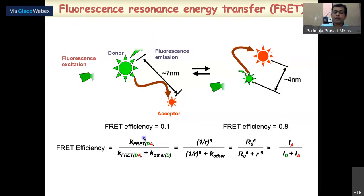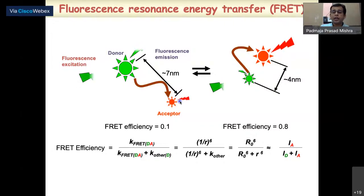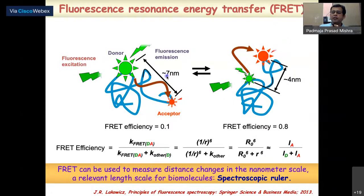From the Förster equation, if we measure the acceptor and donor intensities to get the FRET efficiency, we can back-calculate the distance between them in nanometers. That is why FRET is called a spectroscopic ruler — we can monitor very minute changes in the range of 1 to 10 nanometers, beating the diffraction limit.